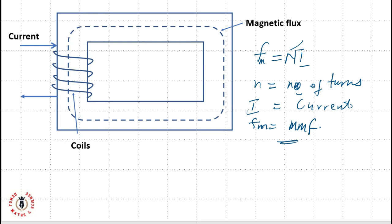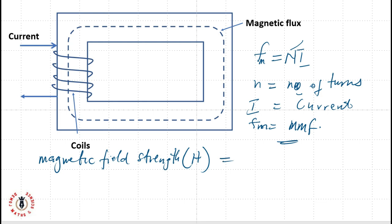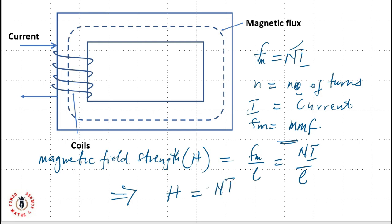As magnetic flux begins to flow in a circuit, a magnetic field is developed around that magnetic material. This magnetic field has a strength which we refer to as magnetic field strength, denoted as H. The magnetic field strength is basically the ratio of magnetomotive force Fm to length. Since Fm equals NI, we can say that H equals NI over L.